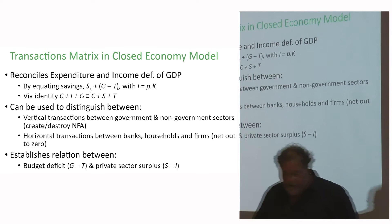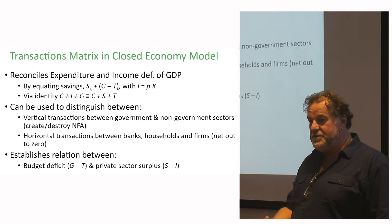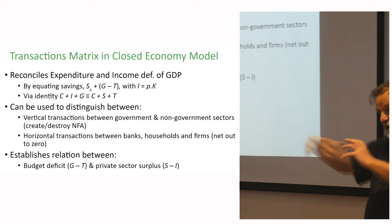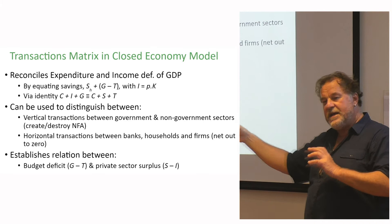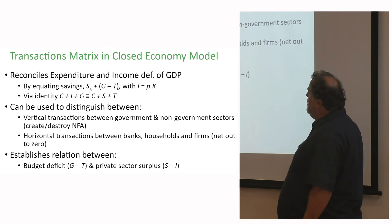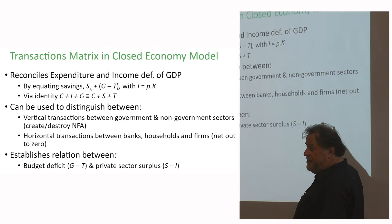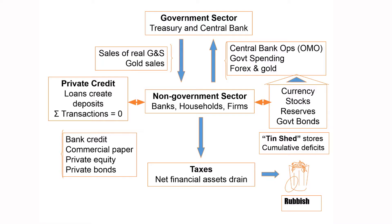One of the things MMT highlights is the difference between vertical and horizontal transactions. Vertical transactions are between government and all non-government sectors — banks, households, firms. Horizontal transactions are within the bank, household, and firm sectors. The transactions matrix also establishes a relationship between the budget deficit and the private sector surplus — or government surplus and private sector deficit — in a closed economy.